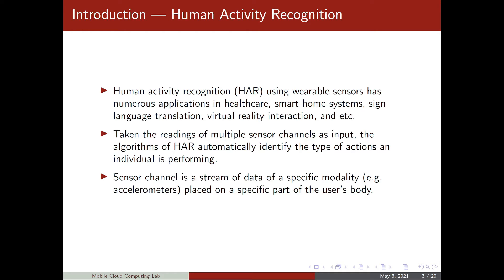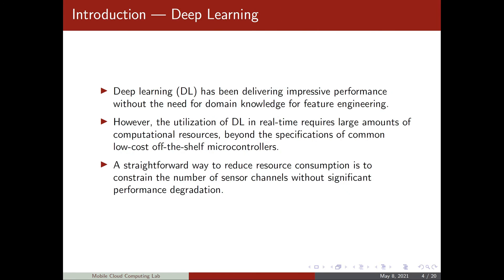Usually, HAR for wearable sensors use multiple sensor channels at its input. We refer to sensor channel as a stream of data of a specific modality, for example accelerometers or gyroscopes, placed on a specific part of the user's body. For instance, an accelerometer placed on the wrist is a sensor channel.